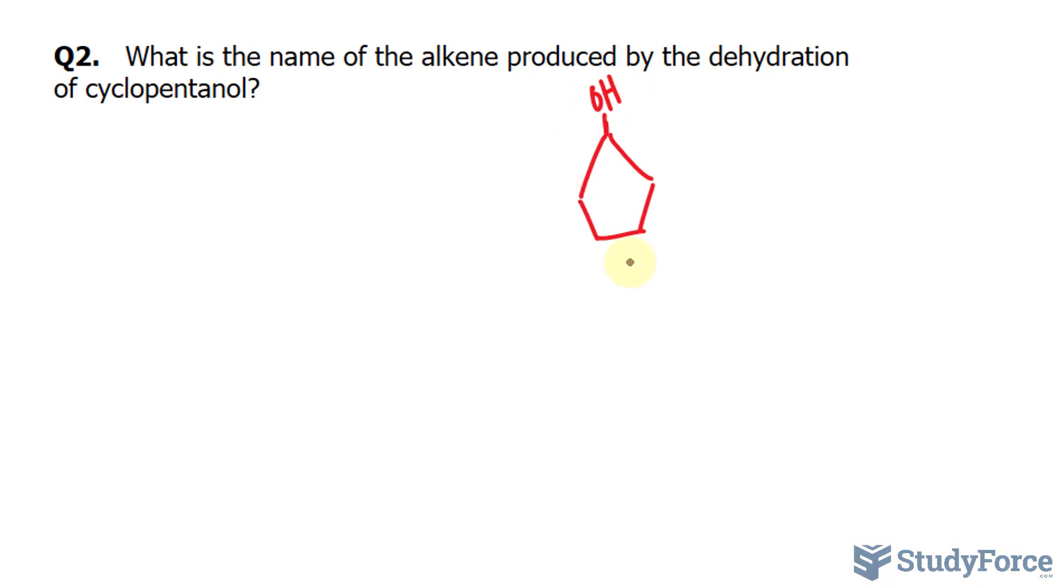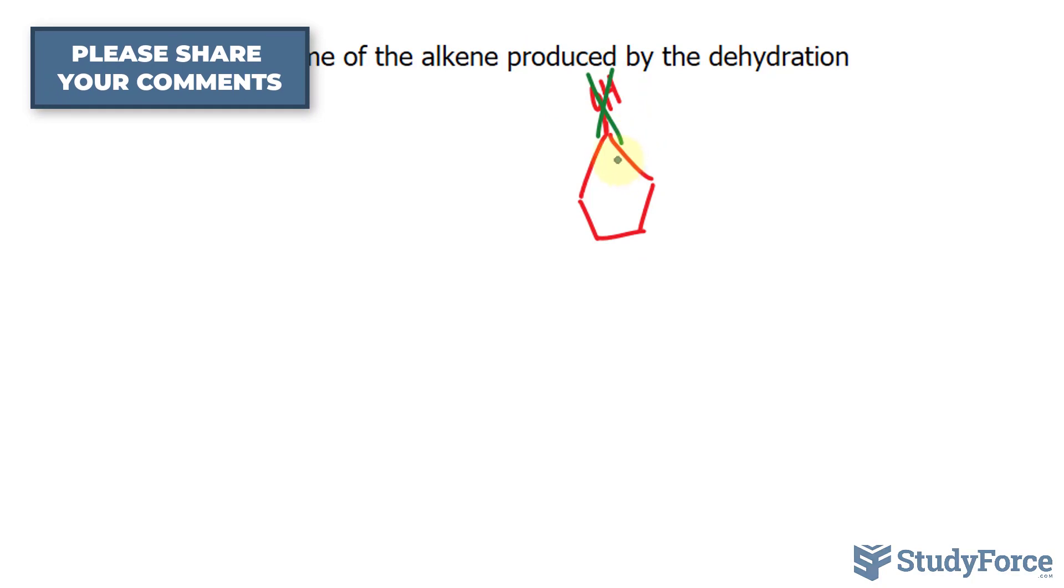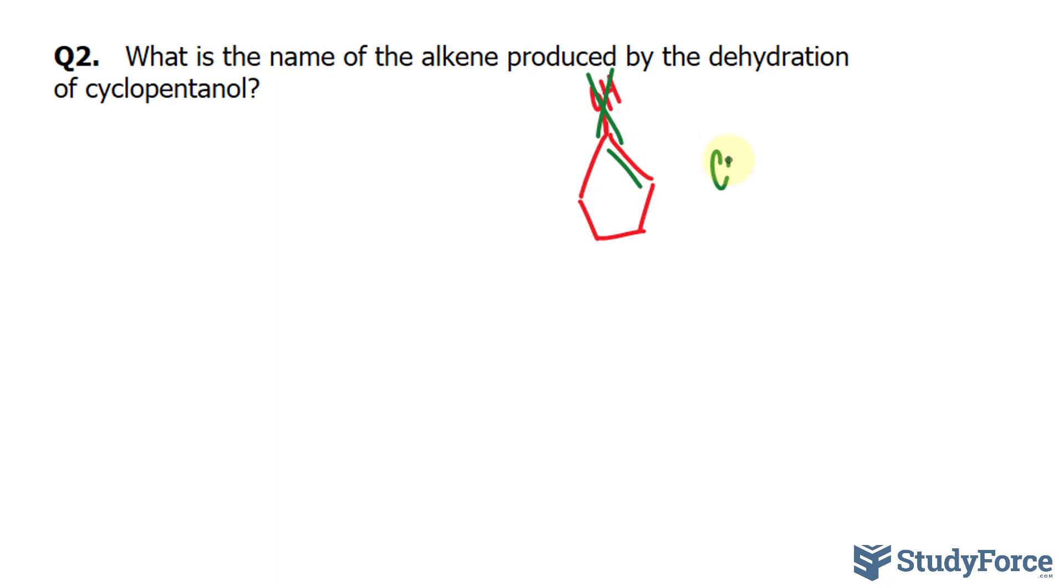Of course, the OH will be removed and replaced with a double bond. So we won't see this anymore, and you can place your double bond either here or here. The name of this molecule is cyclopentene.